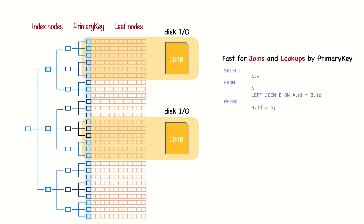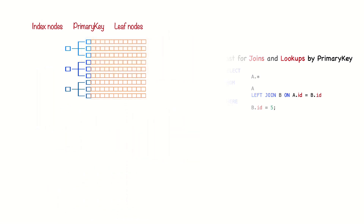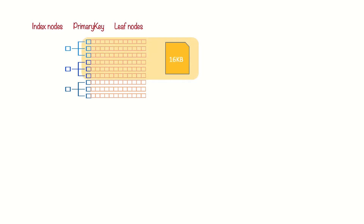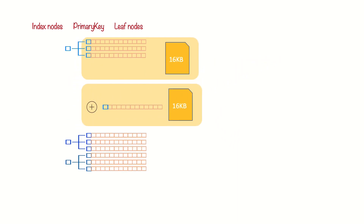A clustered index holds both the index and the data together in one B-tree, so retrieving rows from it is normally faster than a comparable lookup in a non-clustered index. On the downside, if the tables are not designed to take advantage of the clustered index's properties, some drawbacks can appear. For instance, when new rows are inserted or when the primary key is updated, tables built upon a clustered index are subject to page splits. A page split happens when a row's key value dictates that the row must be placed into a page that is full of data.